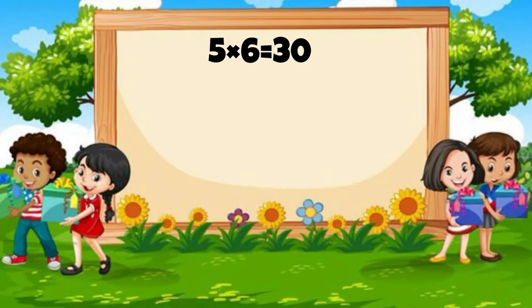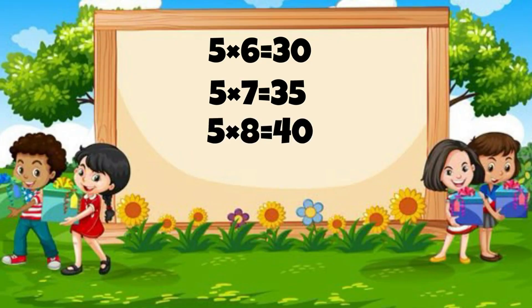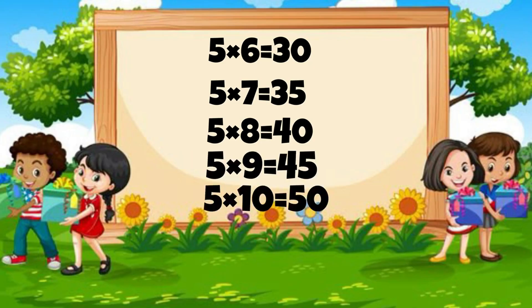5 7s are 35. 5 8s are 40. 5 9s are 45. 5 10s are 50.